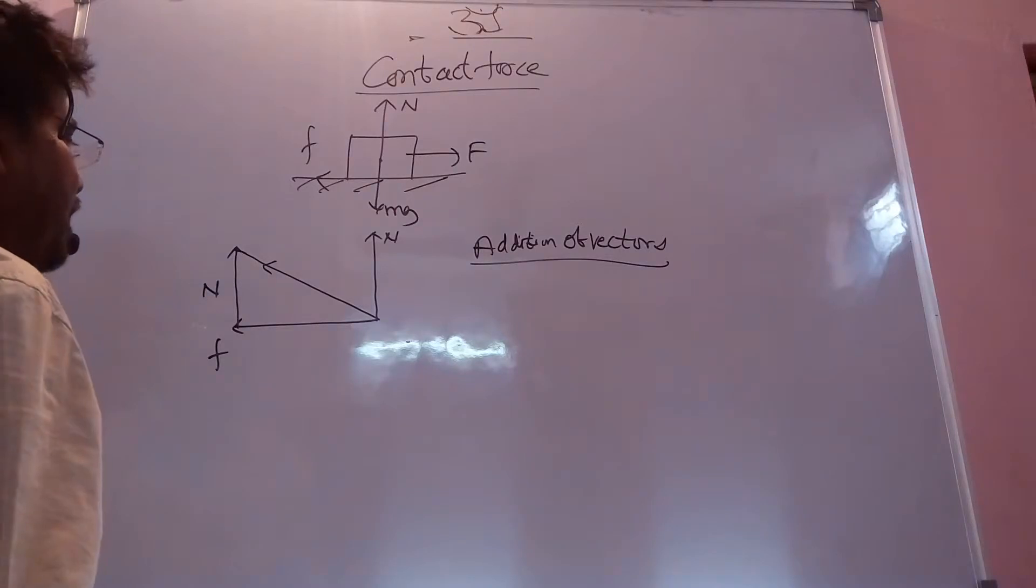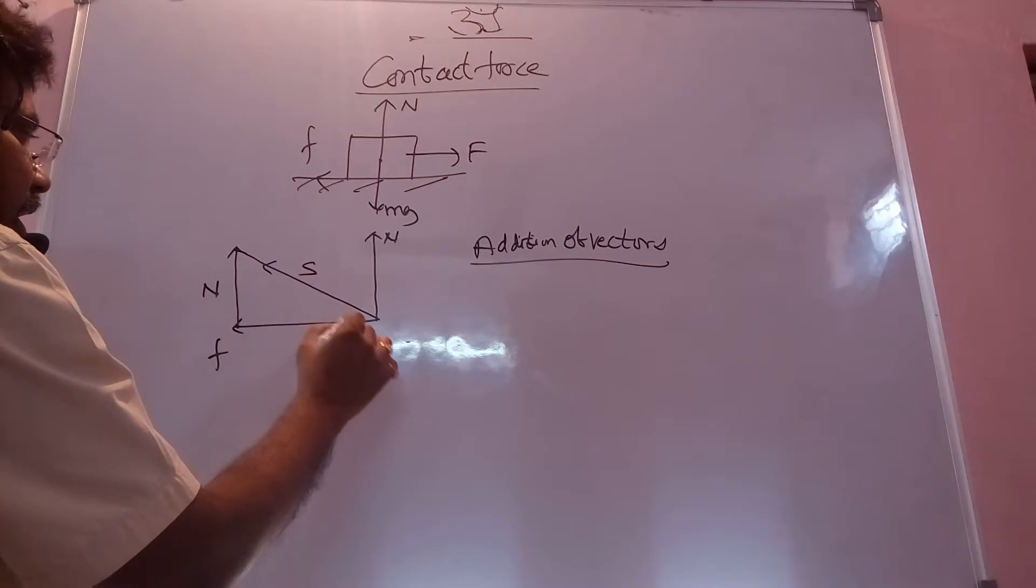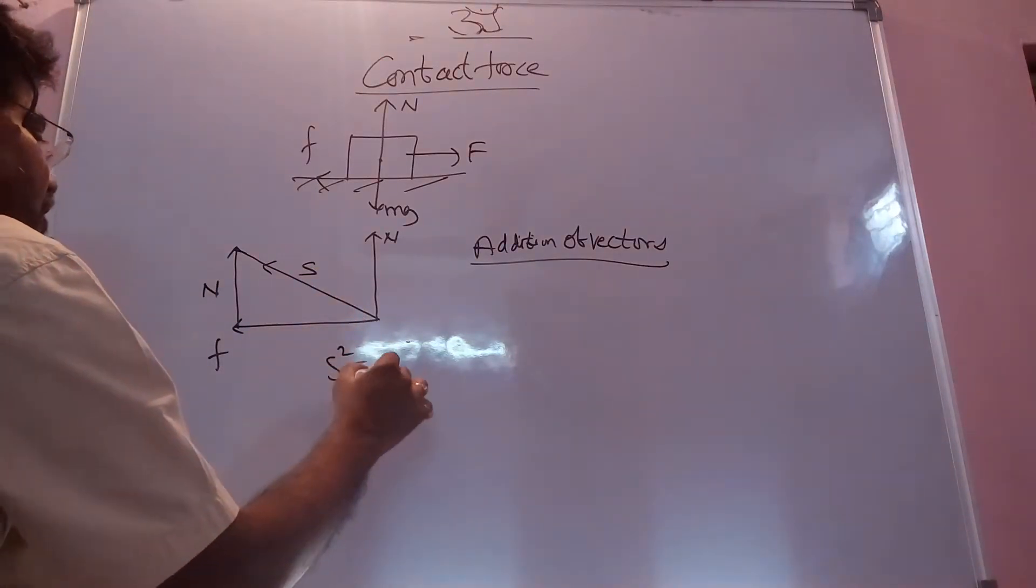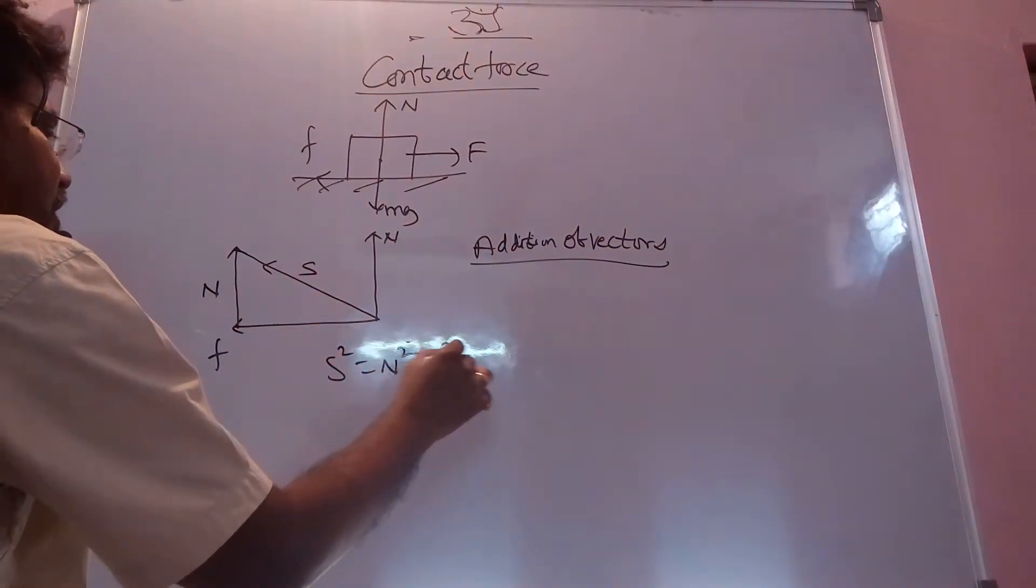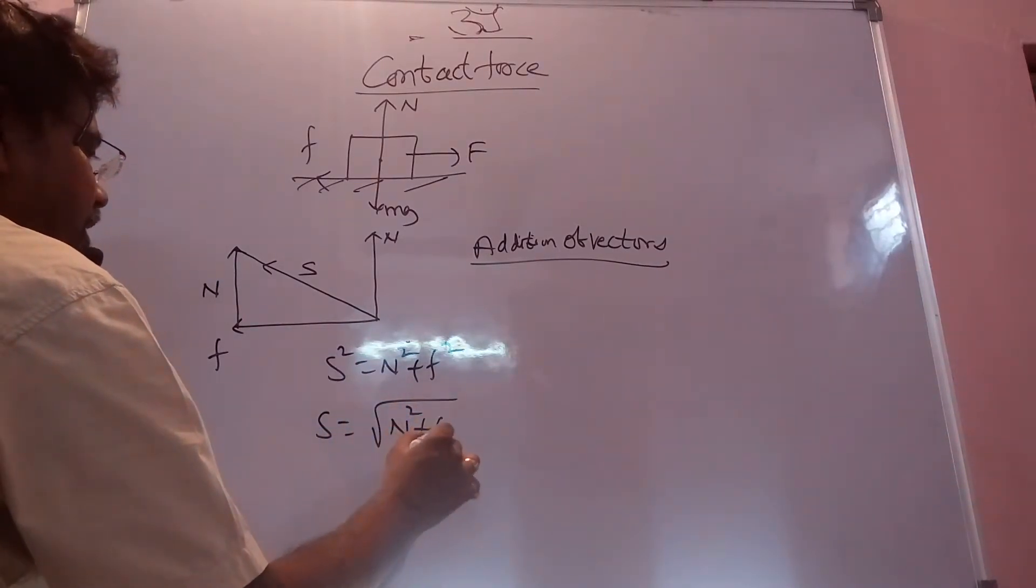Contact force I am taking as S, you can take anything. So what happens here? One right angle triangle is created. So, S² equals N² plus F². Otherwise, S equals square root of N² plus F².